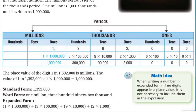The math idea says: when writing a number in expanded form, if no digits appear in a place value, it is not necessary to include them in the expression. We can see that with the last one — two times one thousand — we didn't write anything for the hundreds, tens, and ones place because those digits were zero.